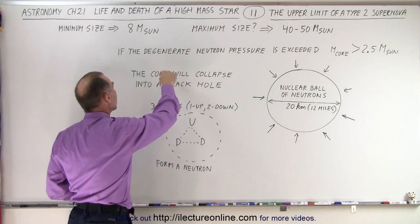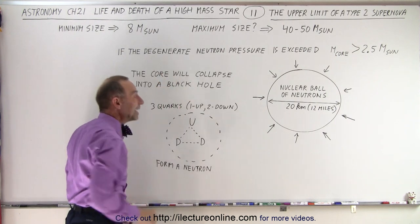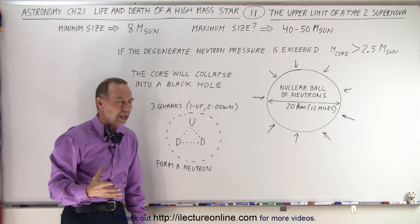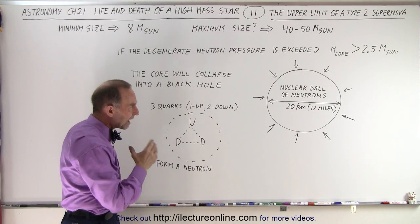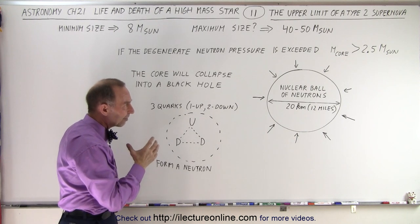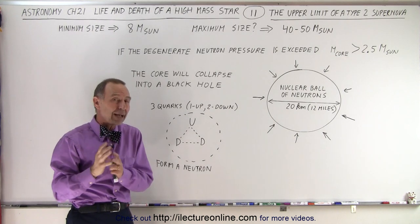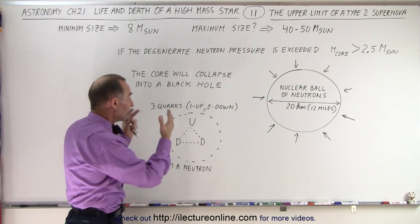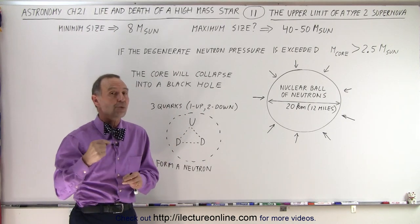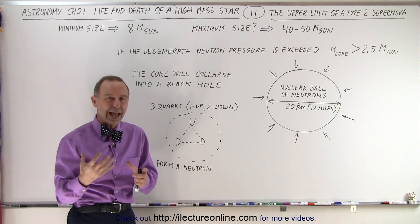Once they do that, the core will continue to collapse and turn itself into a black hole. Now the mass of the core has to be at least two and a half times the mass of the sun according to our calculations for this to happen, and so it's a very rare event, but we know it does happen.